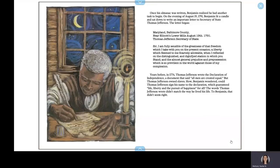The letter began: Maryland, Baltimore County, near Elliott's Lower Mills, August 19, 1791. Thomas Jefferson, Secretary of State. Sir, I am fully sensible of the greatness of that freedom which I take with you on the present occasion, a liberty which seemed to me scarcely allowable, when I reflected on the distinguished and dignified station in which you stand and the almost general prejudice and prepossession which is so prevalent in the world against those of my complexion.